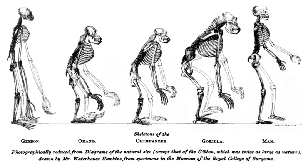Cheetahs are a threatened species. Low genetic diversity and resulting poor sperm quality has made breeding and survivorship difficult for cheetahs. Moreover, only about 5% of cheetahs survive to adulthood. However, it has been recently discovered that female cheetahs can mate with more than one male per litter of cubs. They undergo induced ovulation, which means that a new egg is produced every time a female mates. By mating with multiple males, the mother increases the genetic diversity within a single litter of cubs.